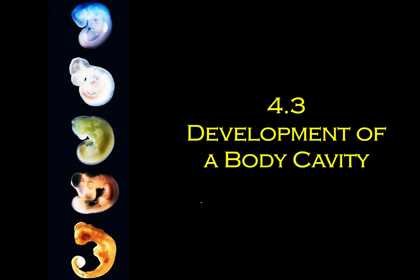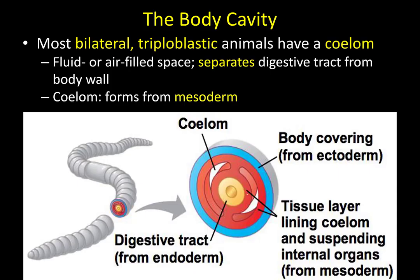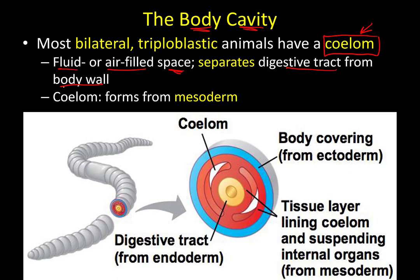Our next topic relates to germ layers and one of the first body structures they create: the body cavity, formally known as a coelom. Body cavities are the open spaces inside the body that organs occupy — either fluid or air-filled — and they separate the digestive tract from the body wall. The coelom forms from the mesoderm, which is why cnidarians and ctenophores don't have one: they're diploblastic and lack mesoderm.